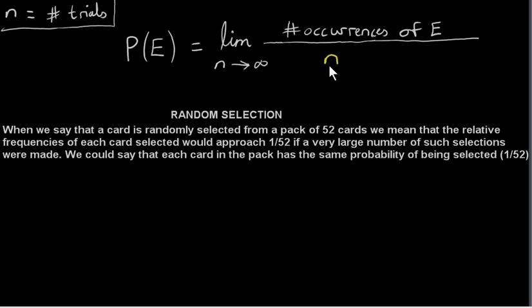We could imagine several hundred trials. And if we find that this number approaches 1 over 52 for each card in the pack, then we have the probability that a particular card is selected: 1 over 52. And we refer to our selection as a random selection. So normally when you see the words random selection, we mean that each card in the pack has the same probability of being selected, and that probability is 1 over 52.